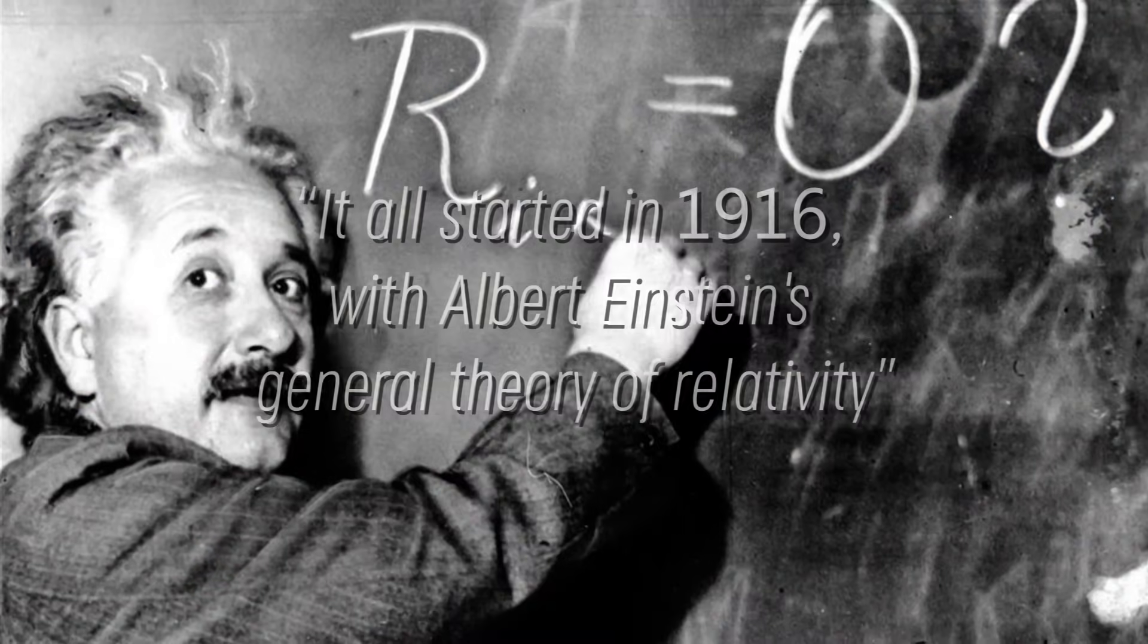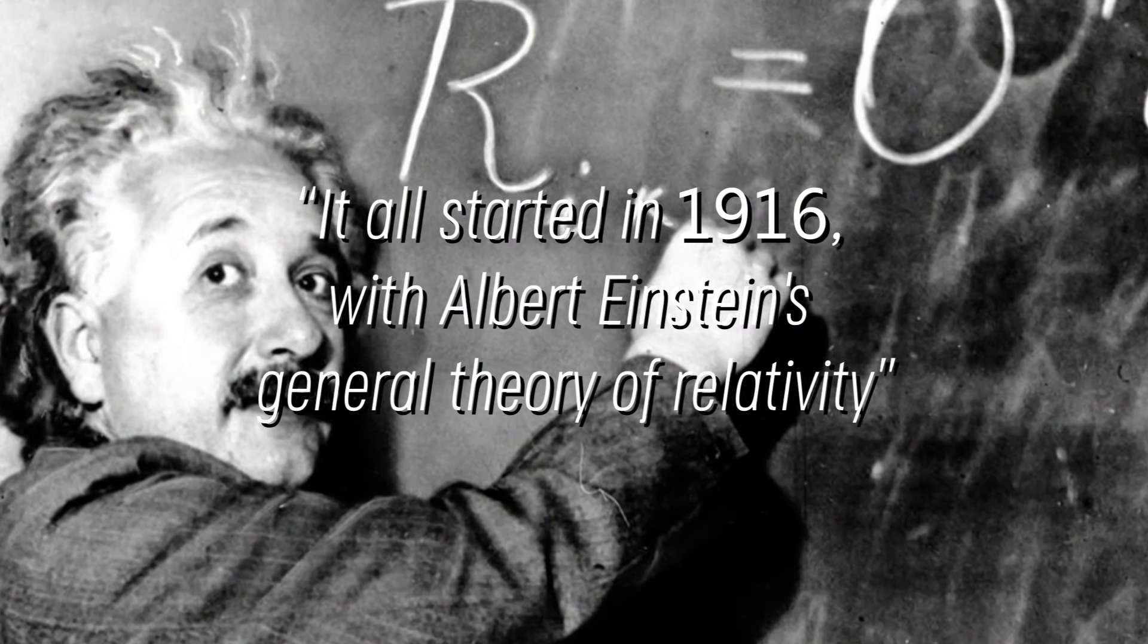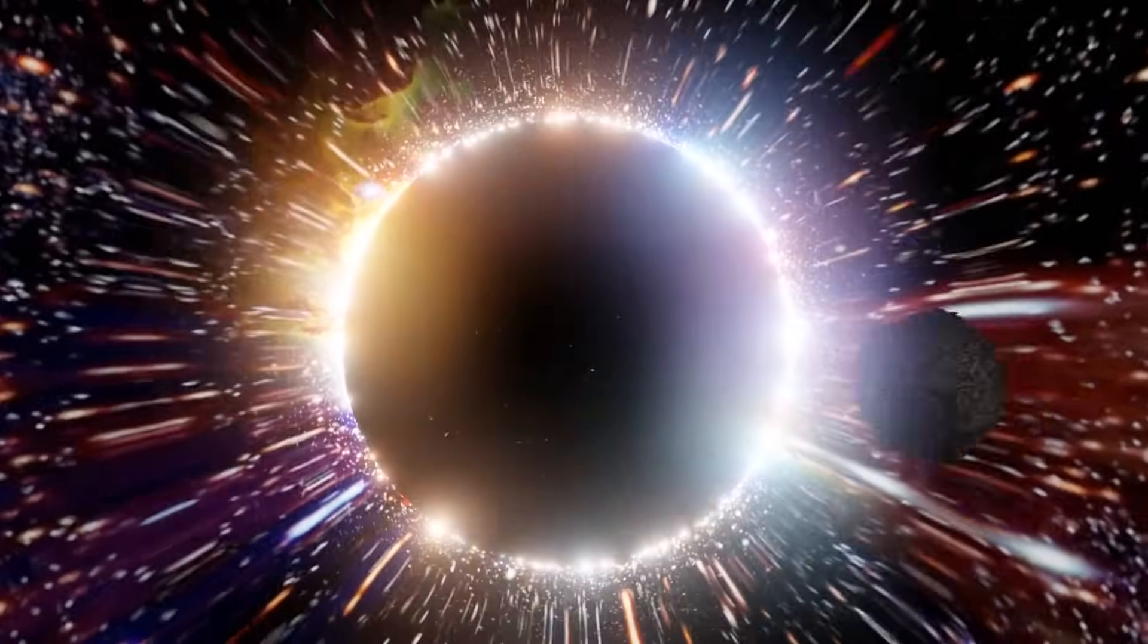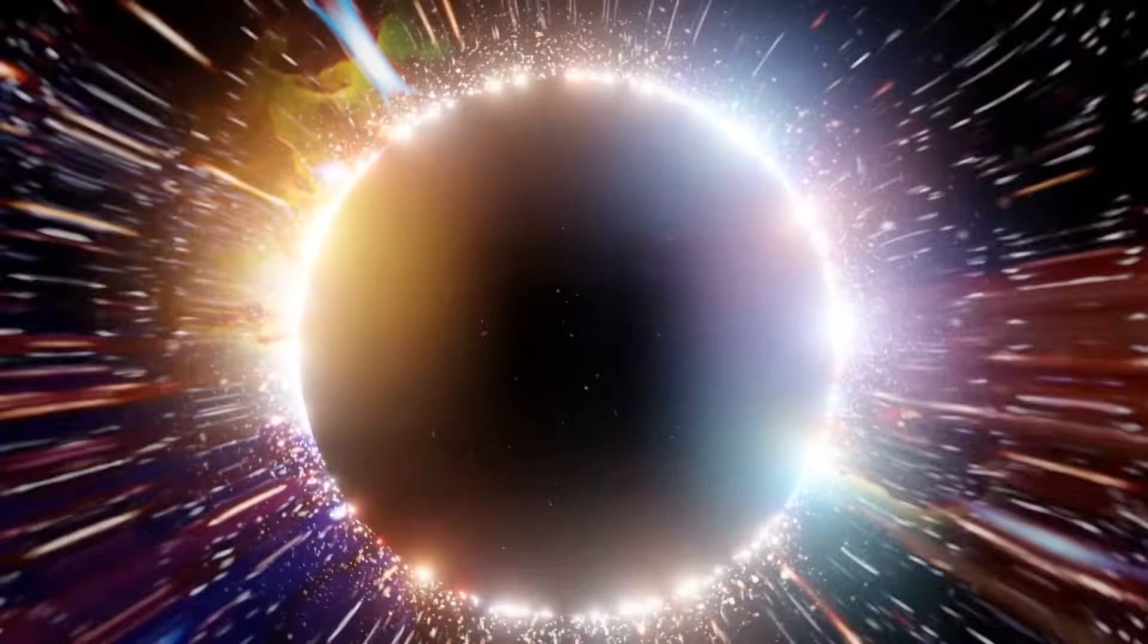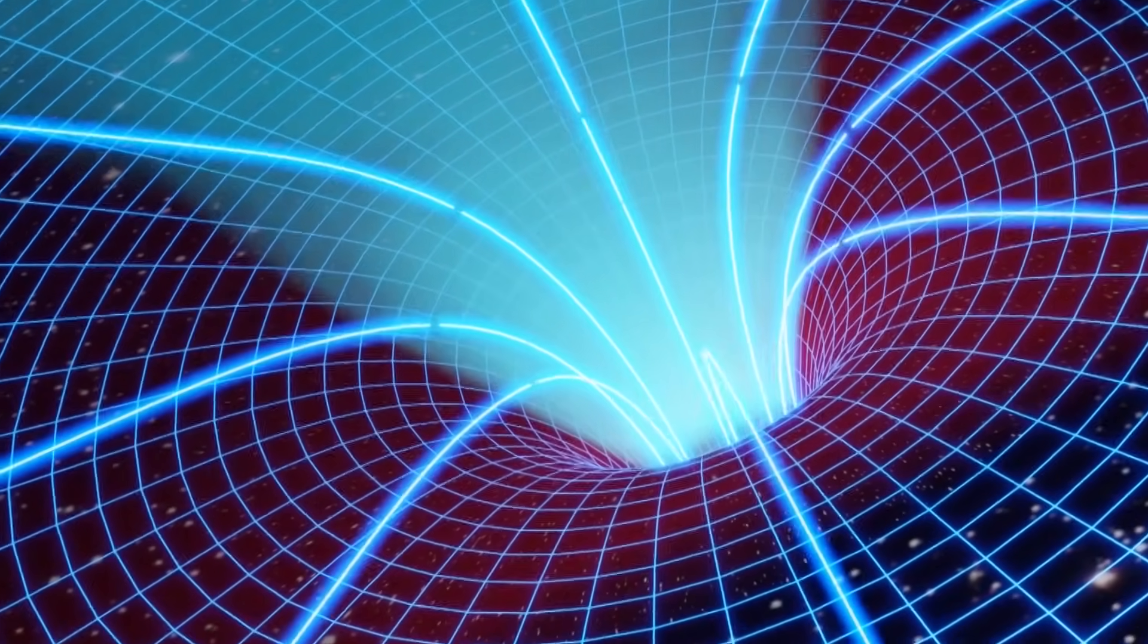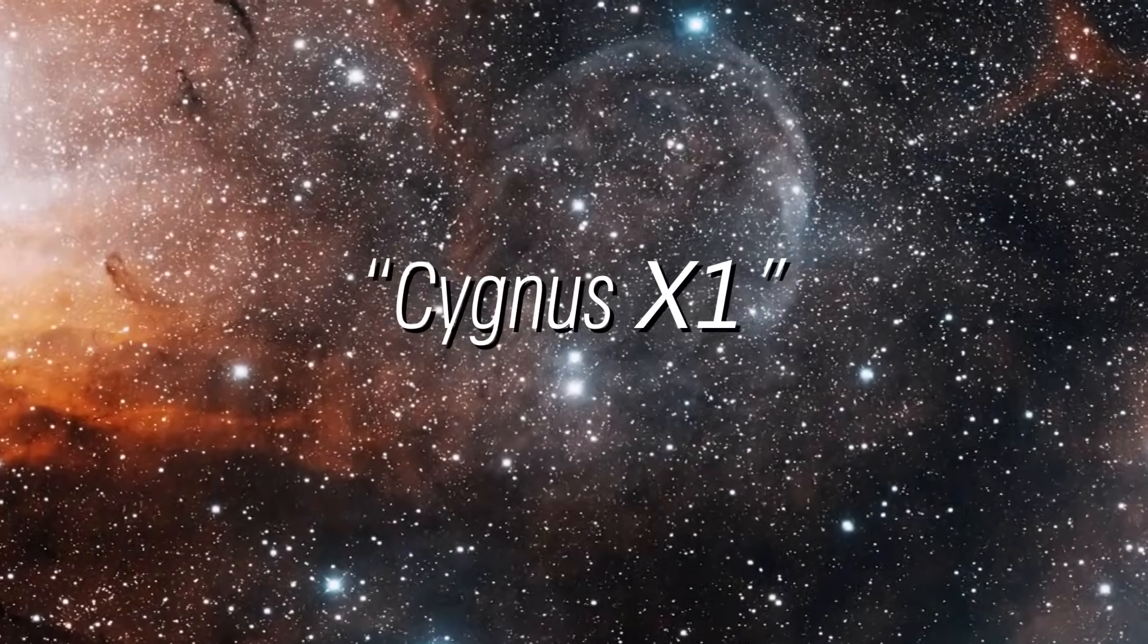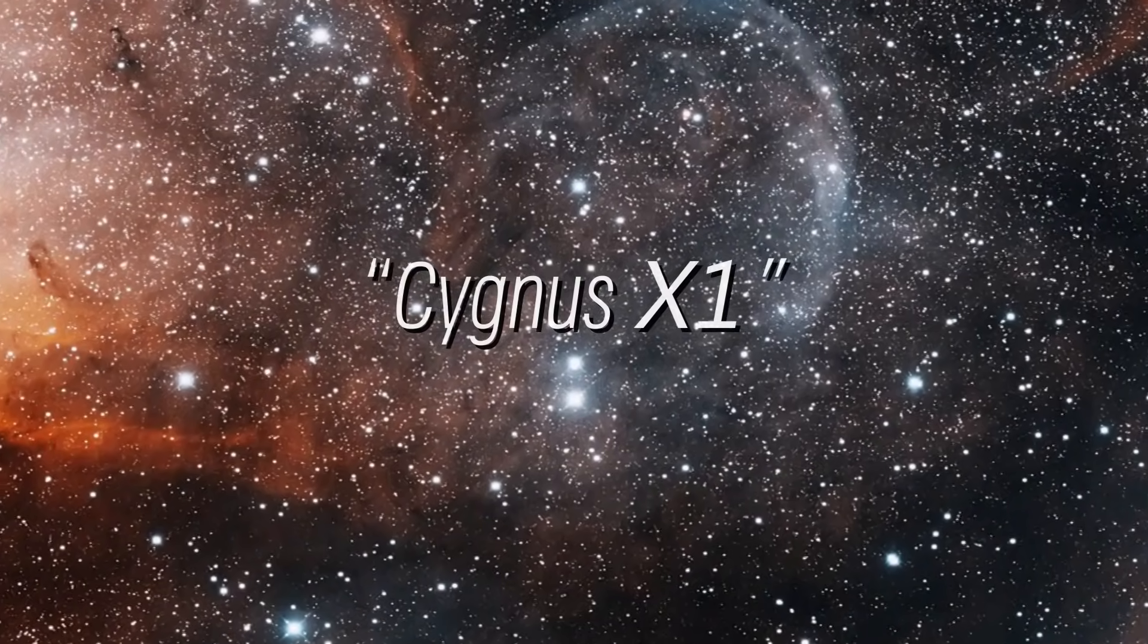It all started in 1916 with Albert Einstein's general theory of relativity, who was the first to predict the existence of these entities. Although the term black hole was officially coined 50 years later, some scientists already believed in Einstein's theory while others dismissed it. It was in the late 1960s when researchers were studying the constellation Cygnus X1 that they noticed something amazing.